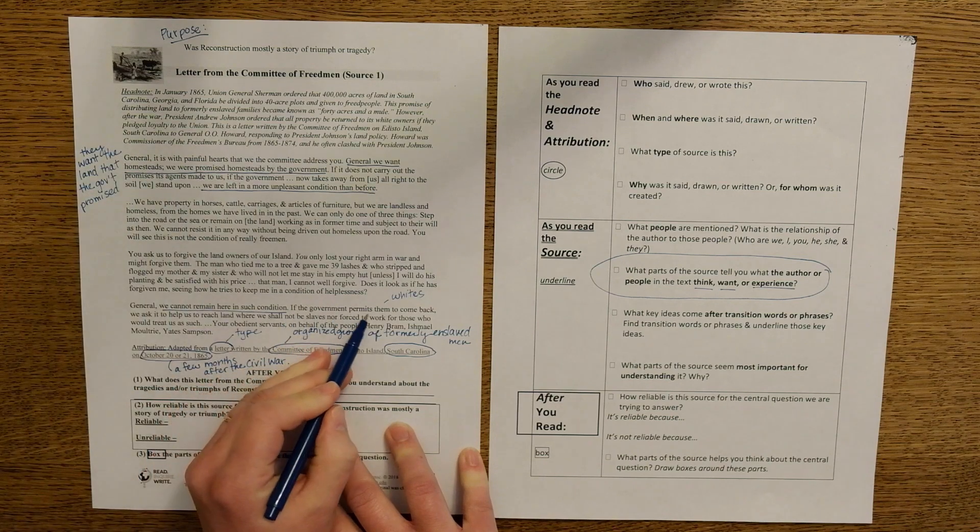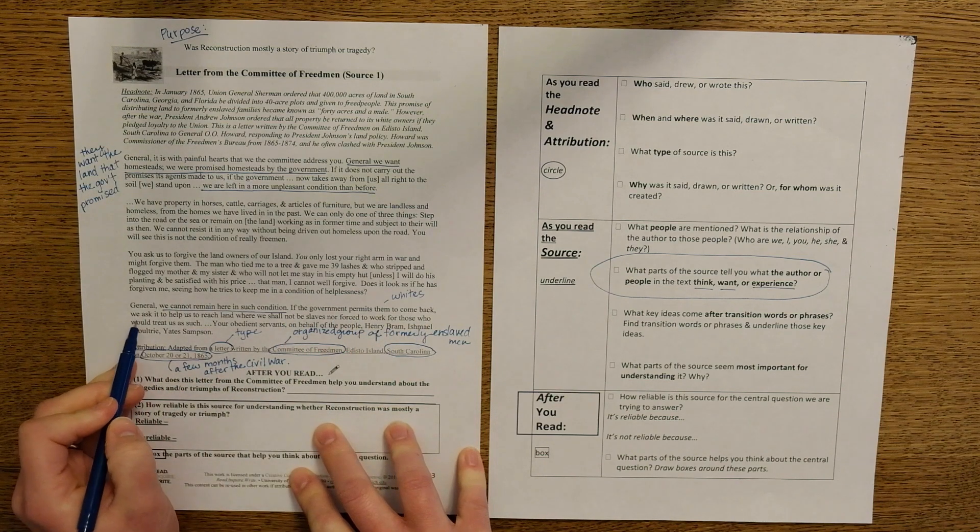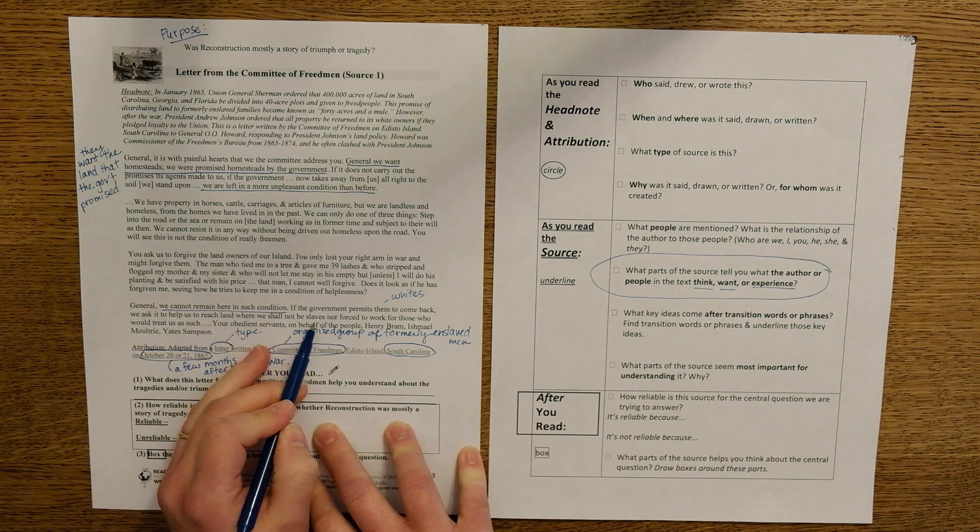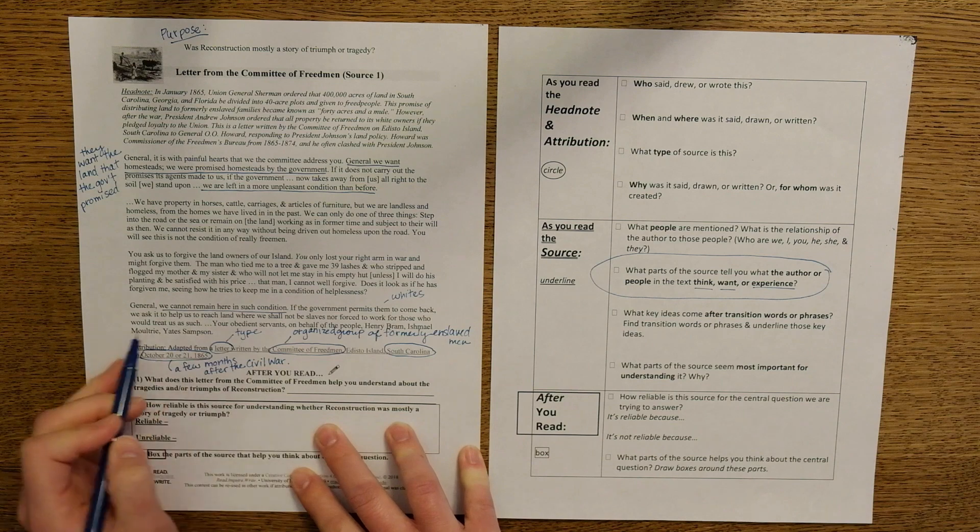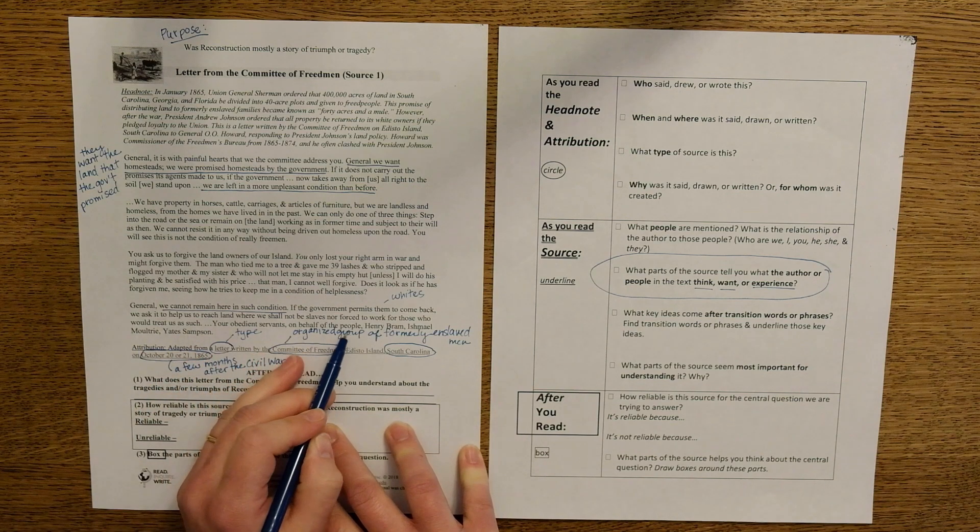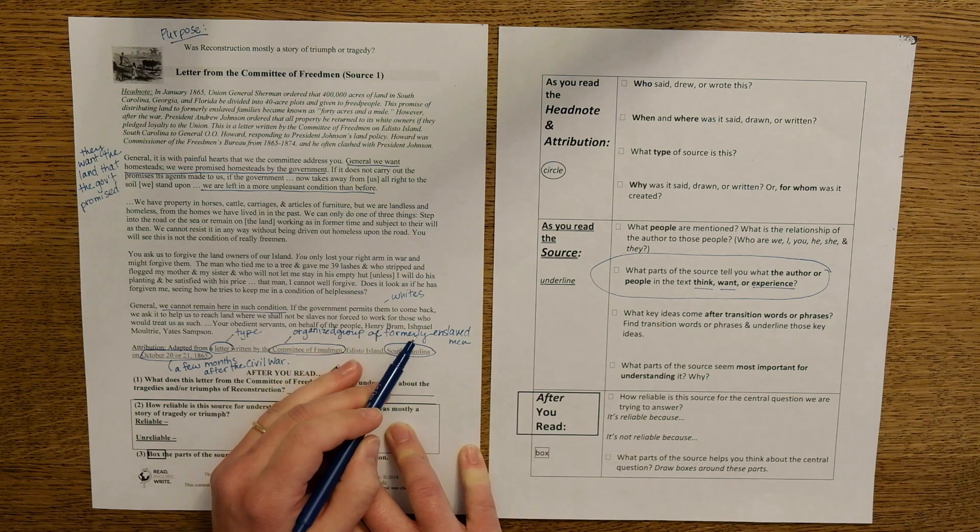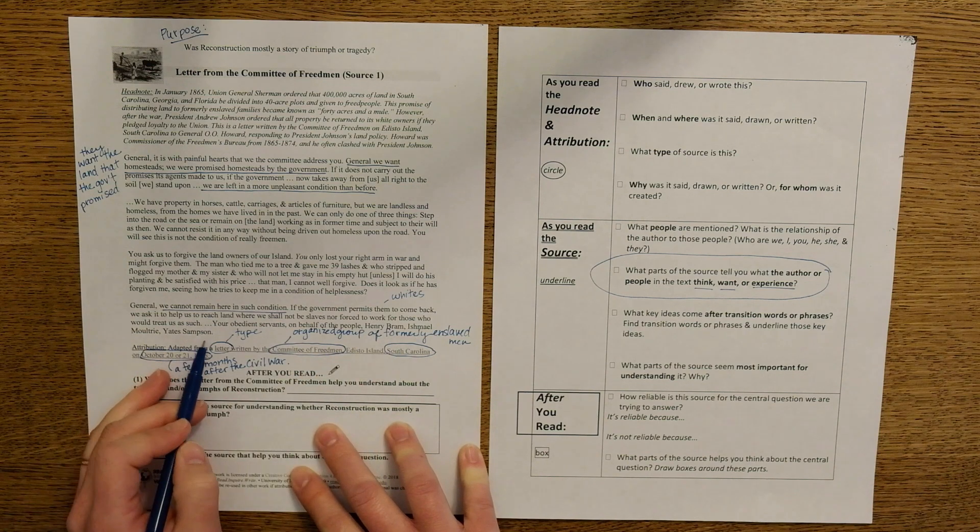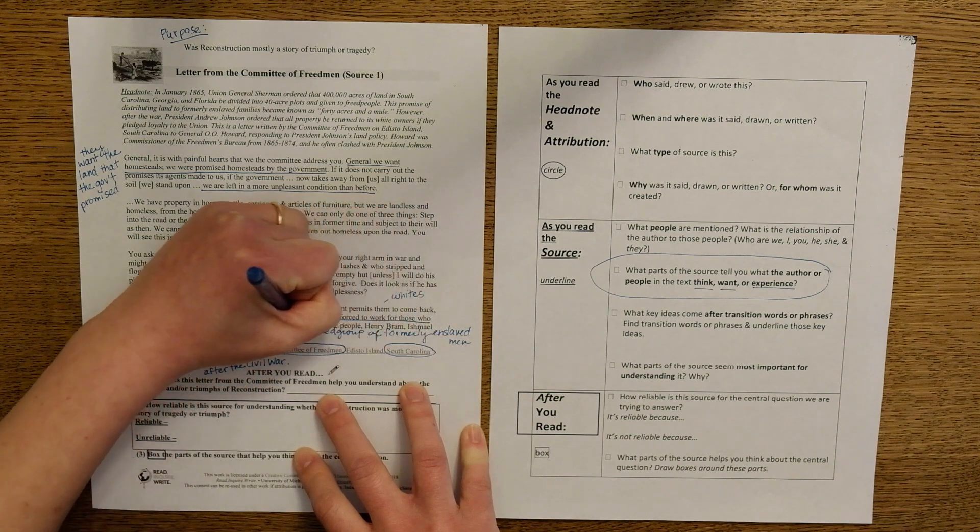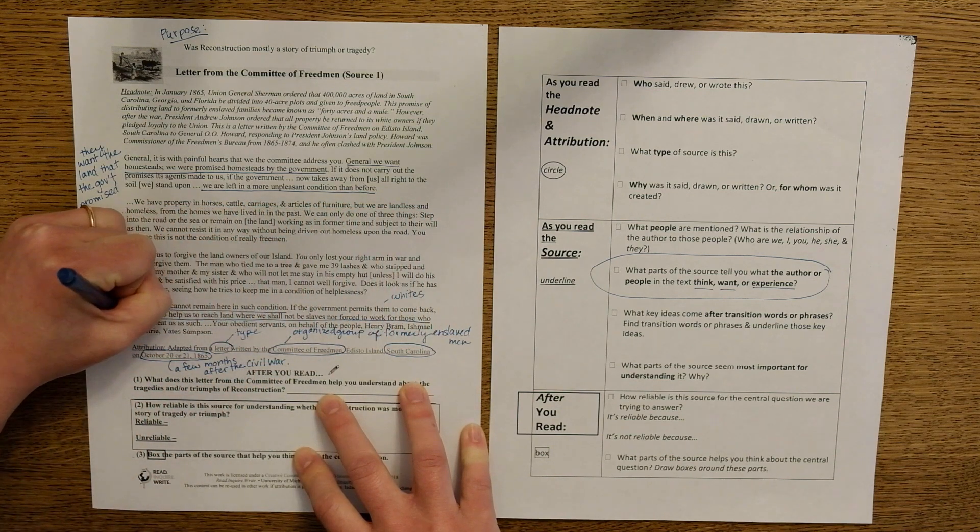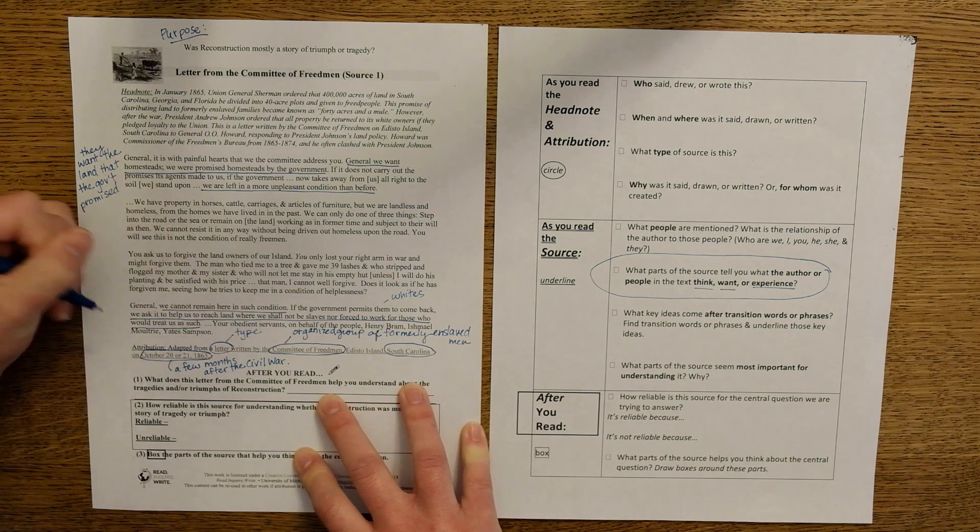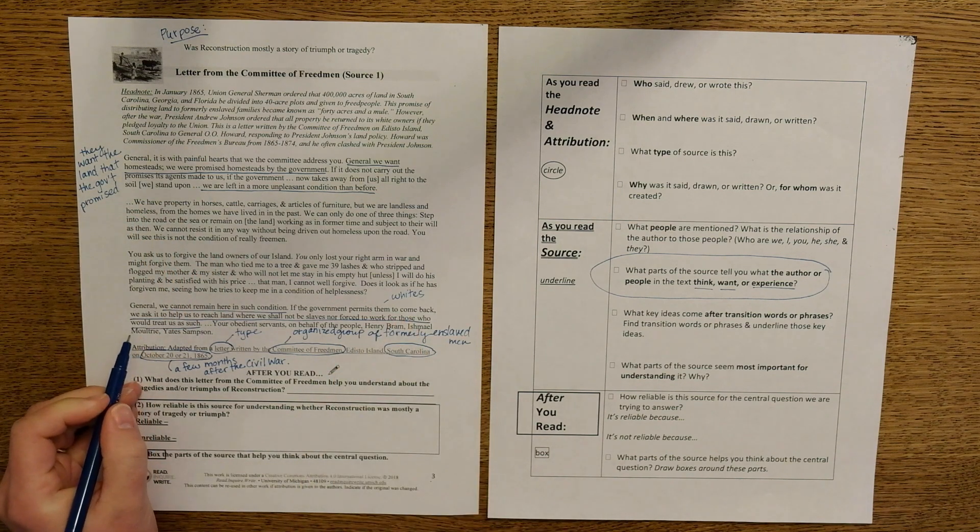If the government permits them to come back, we ask it to help us to reach land where we shall not be slaves nor forced to work for those who would treat us as such. So this is what they want. We ask the government, we want the government to help us reach land where we shall not be slaves or forced to work for those who would treat us as slaves.